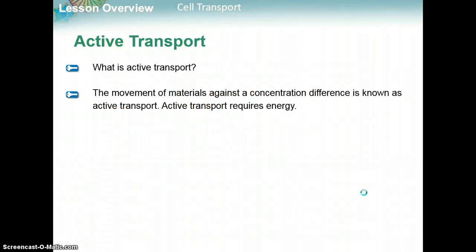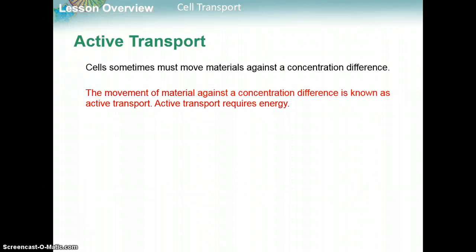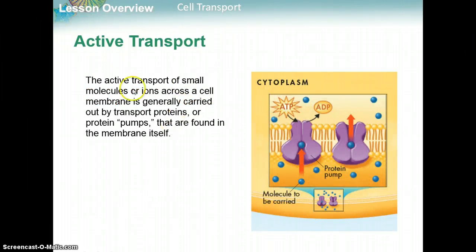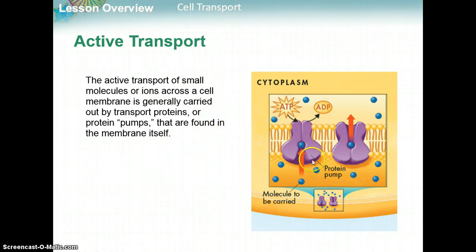Active transport is the movement of material against a concentration difference, and it requires energy. Cells sometimes must move materials against a concentration difference. The movement of material against a concentration difference is known as active transport. Active transport of small molecules or ions across a cell membrane is generally carried out by transport proteins or protein pumps found in the membrane itself, which help different molecules go through the plasma membrane.